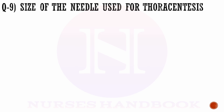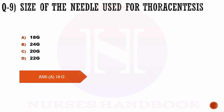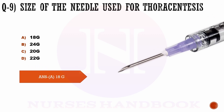Question number 9. Size of the needle used for thoracentesis is: a) 18 gauge, b) 24 gauge, c) 20 gauge, d) 22 gauge. The correct answer is option a, 18 gauge needle.